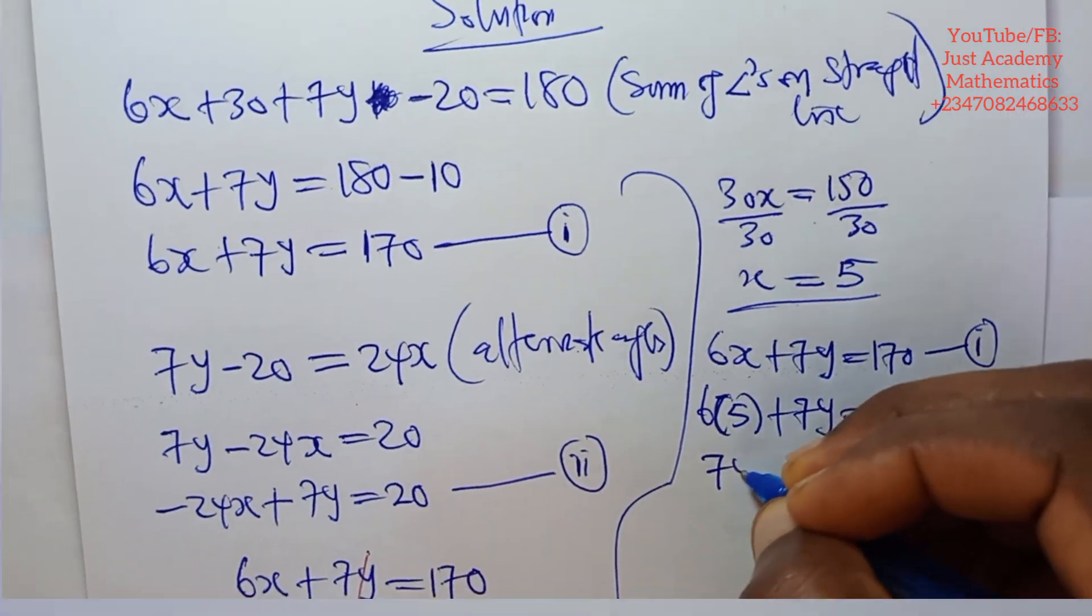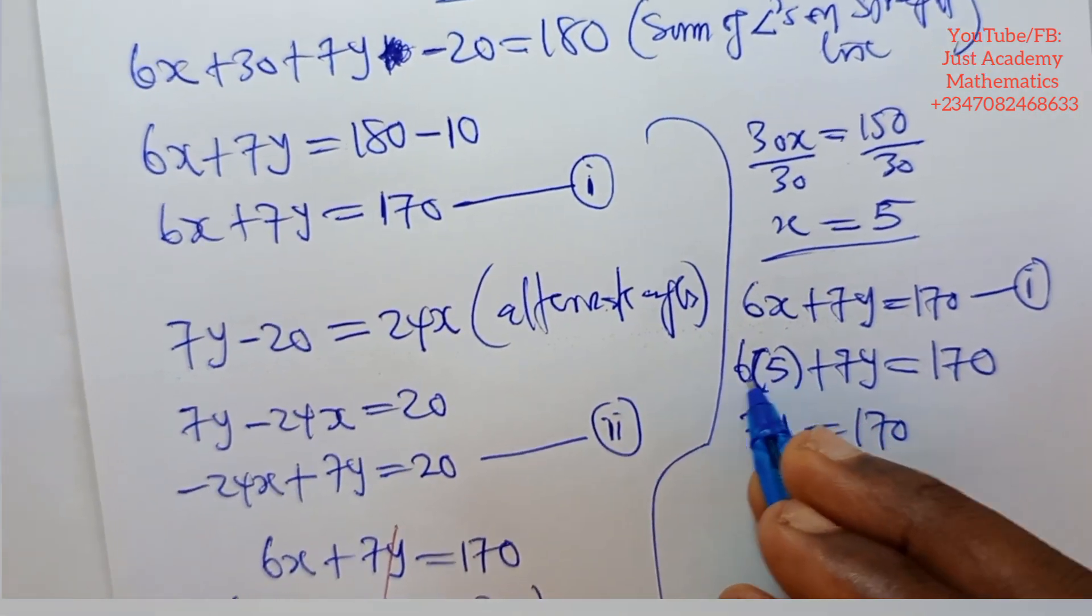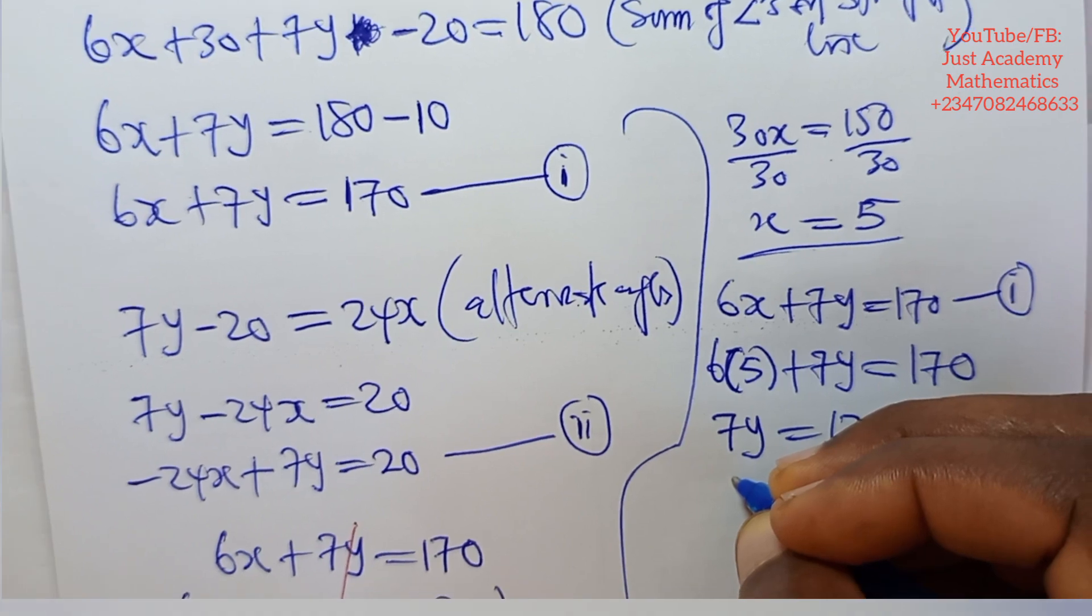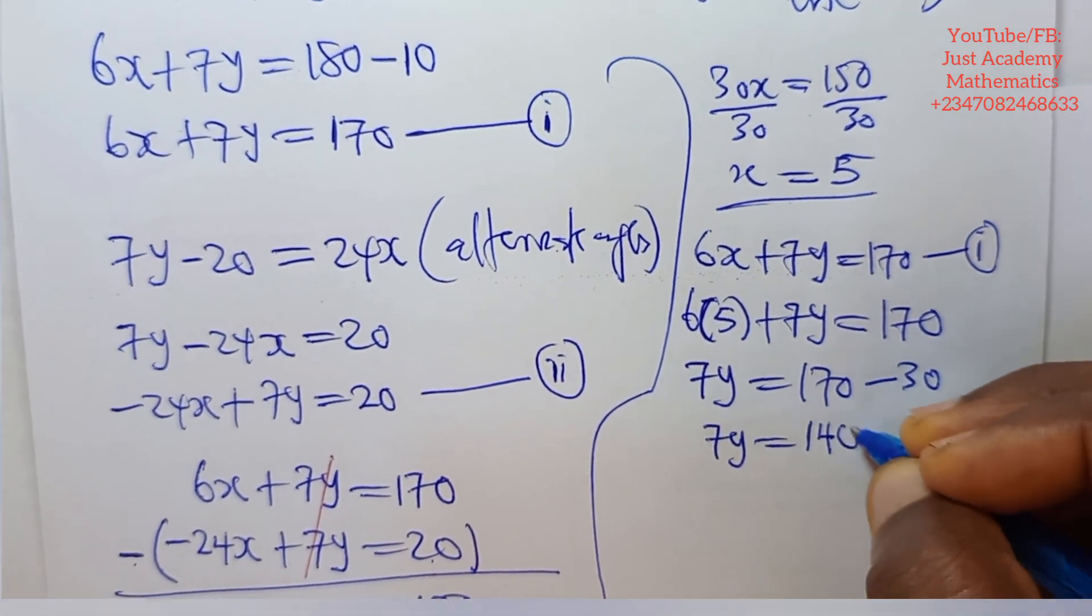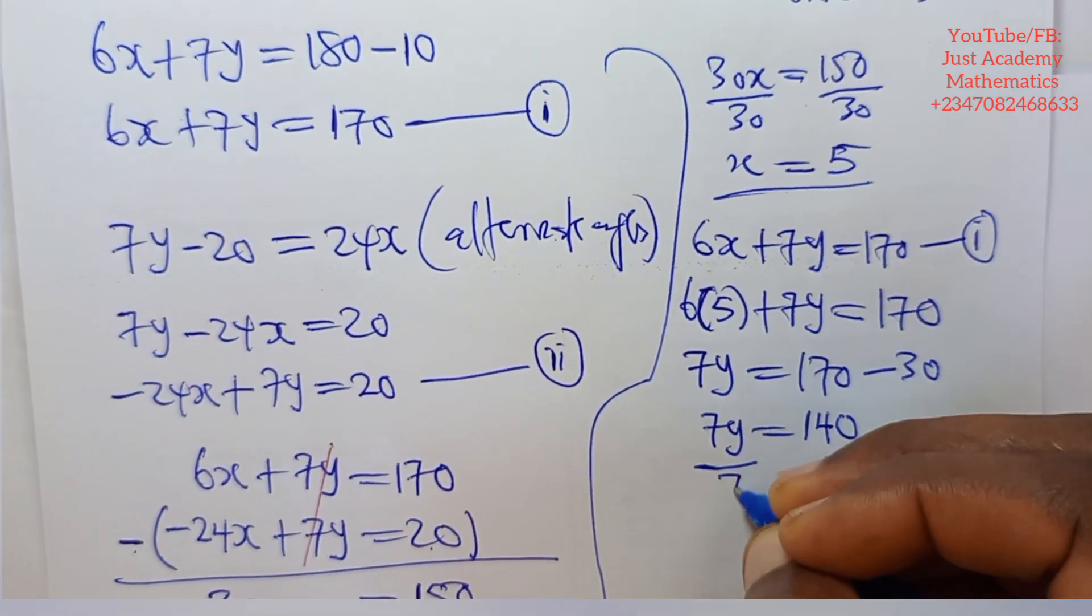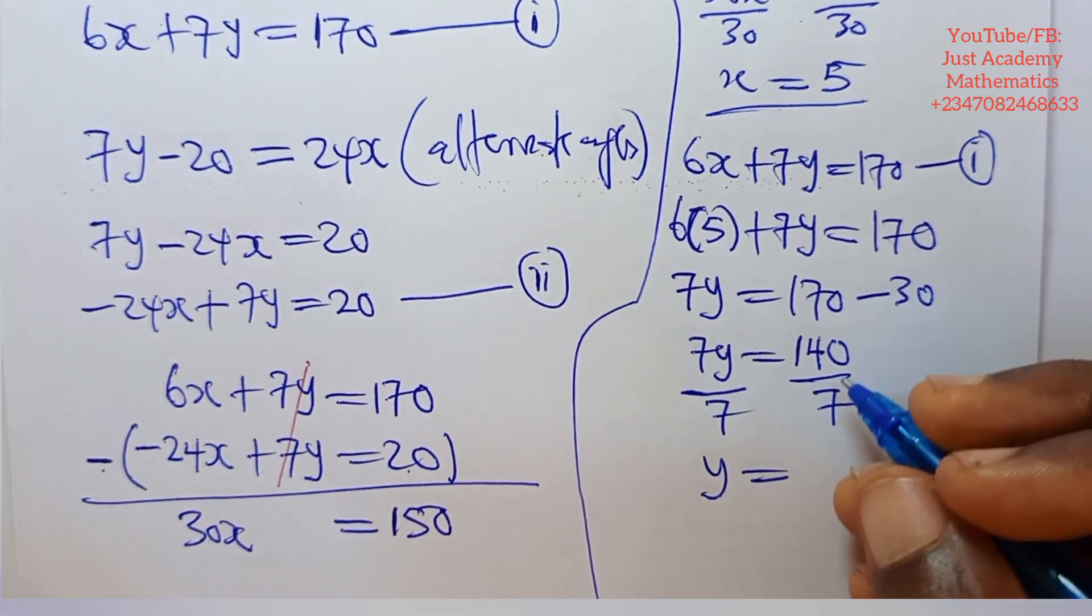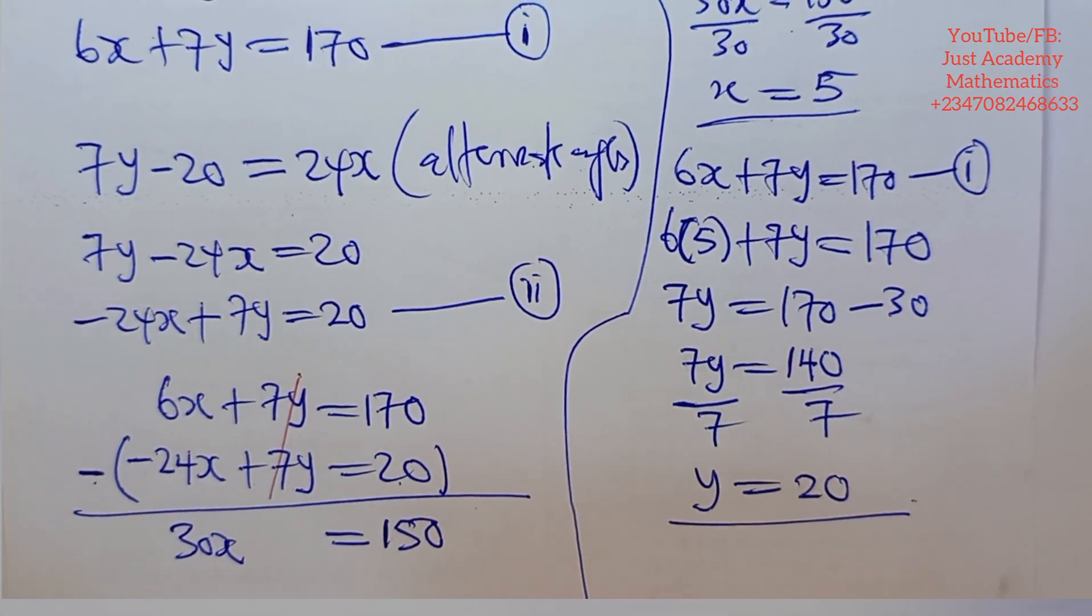So we have 7y is equals to 170. This time this is 30. 30 comes to this side becomes minus 30. So 7y is equals to 170 minus 30 is 140. Divide both sides by 7. So y is equals to 20. Y is equals to 20.